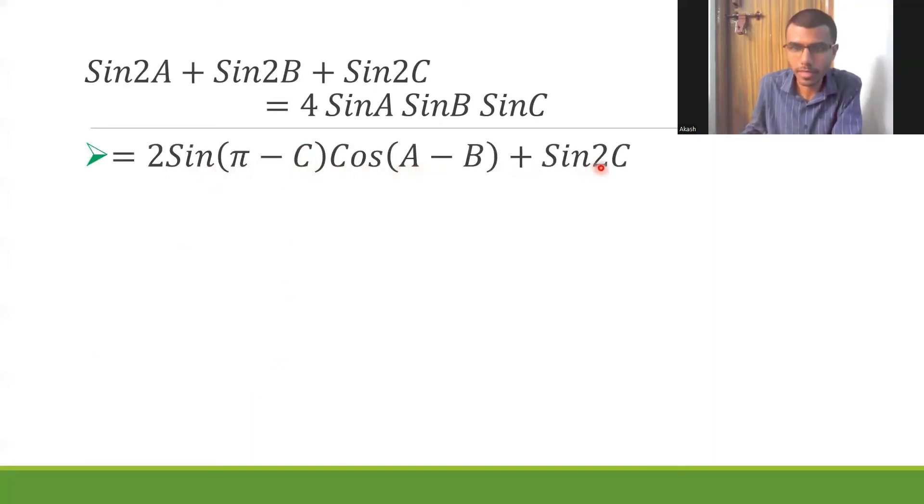2sin(π-C)cos(A-B) + sin2C. Don't forget to mention the reason like this: A + B + C is equal to π, so A + B is equal to π - C. It would give a very good impression to the examiner that this person has a clear understanding of how they are writing.